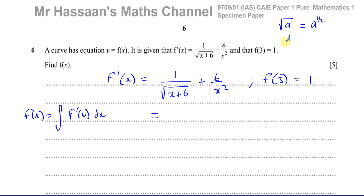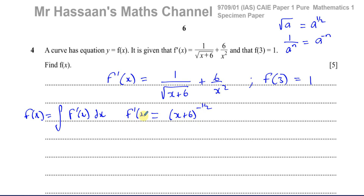The other thing we need to realize is that if we have 1 over something to the power of a number, we can rewrite that as that base to the negative power. So 1 over a to the power of n equals a to the power of negative n — this means the reciprocal. Knowing those rules, I can rewrite 1 over sqrt(x+6) as (x+6) to the power of negative a half, and 6 over x squared becomes 6x to the power of negative two.